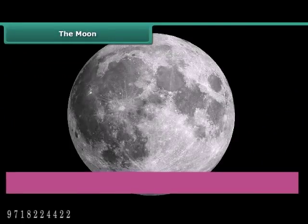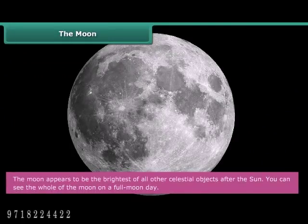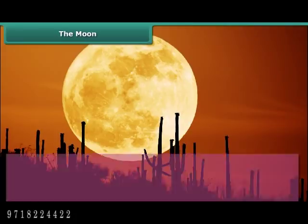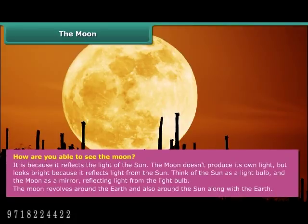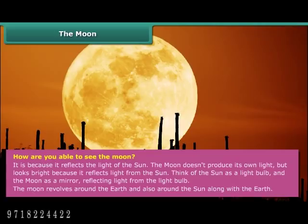The Moon appears to be the brightest of all celestial objects after the Sun. You can see the whole of the Moon on a full Moon day. The Moon does not produce its own light, but looks bright because it reflects the light from the Sun. Think of the Sun as a light bulb and the Moon as a mirror reflecting light from the light bulb.